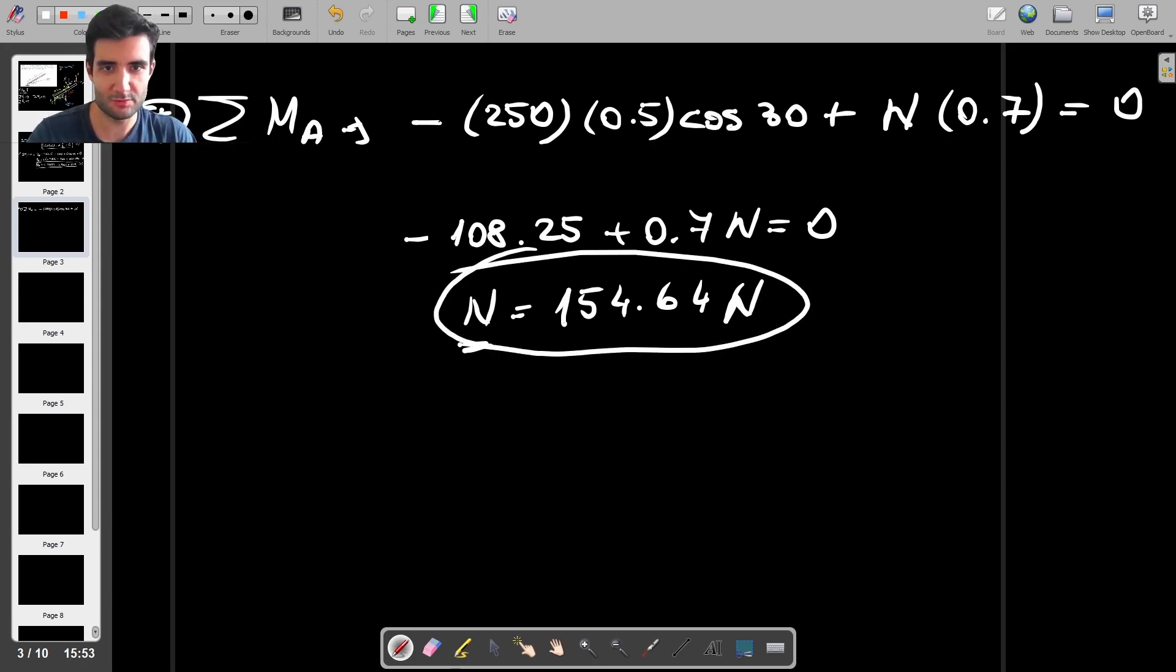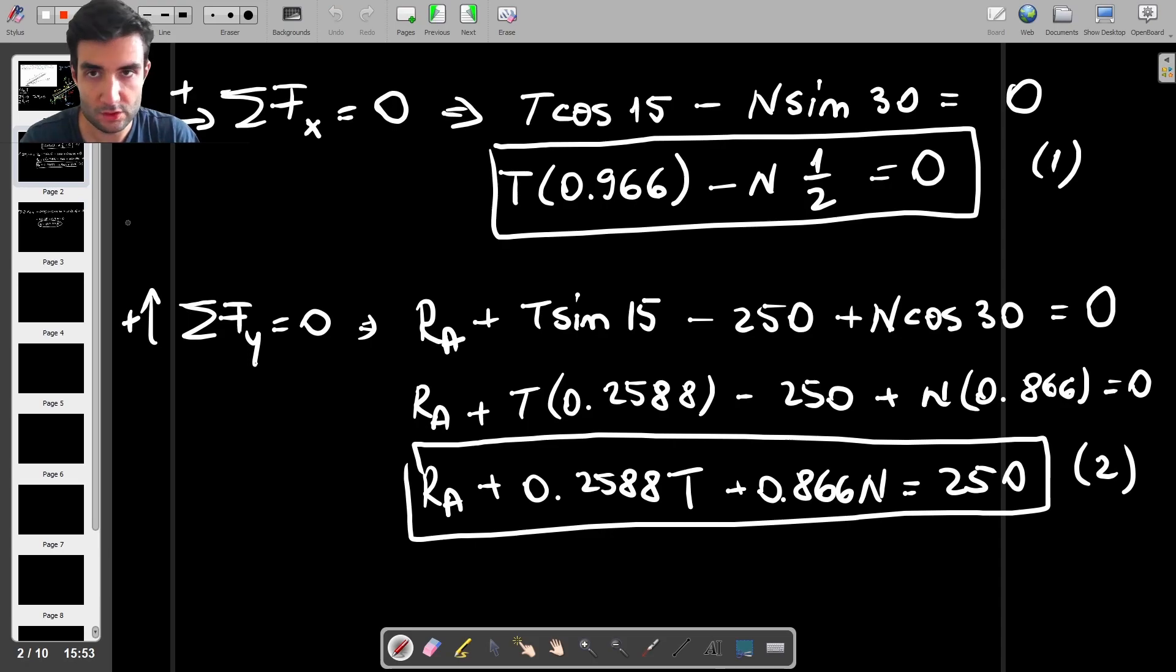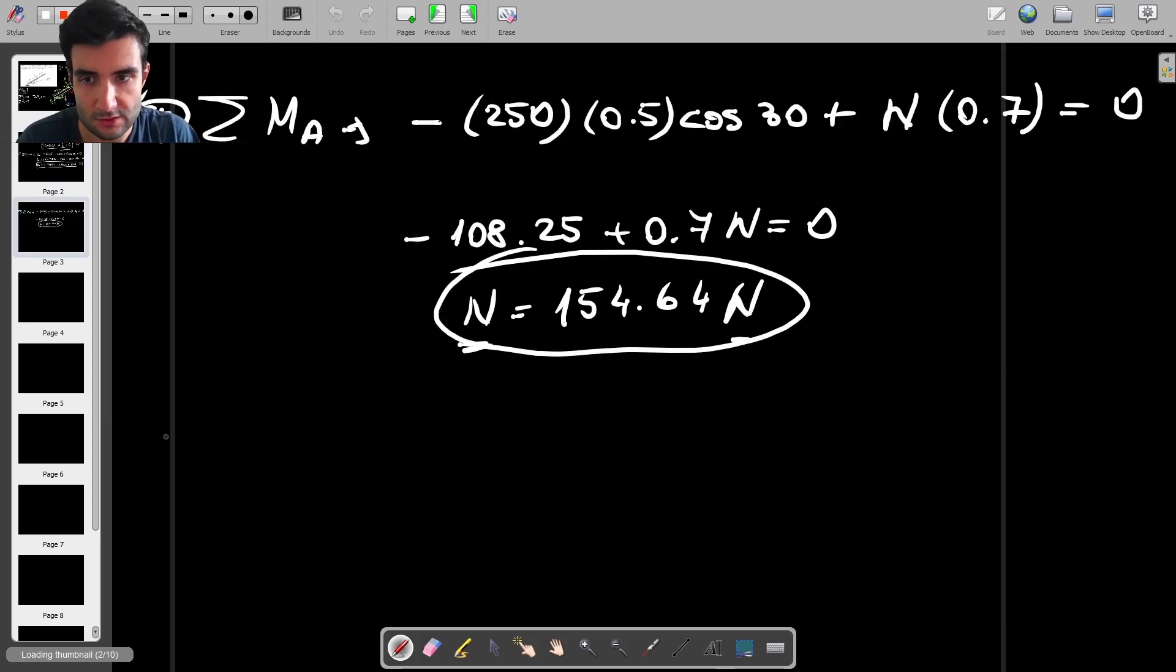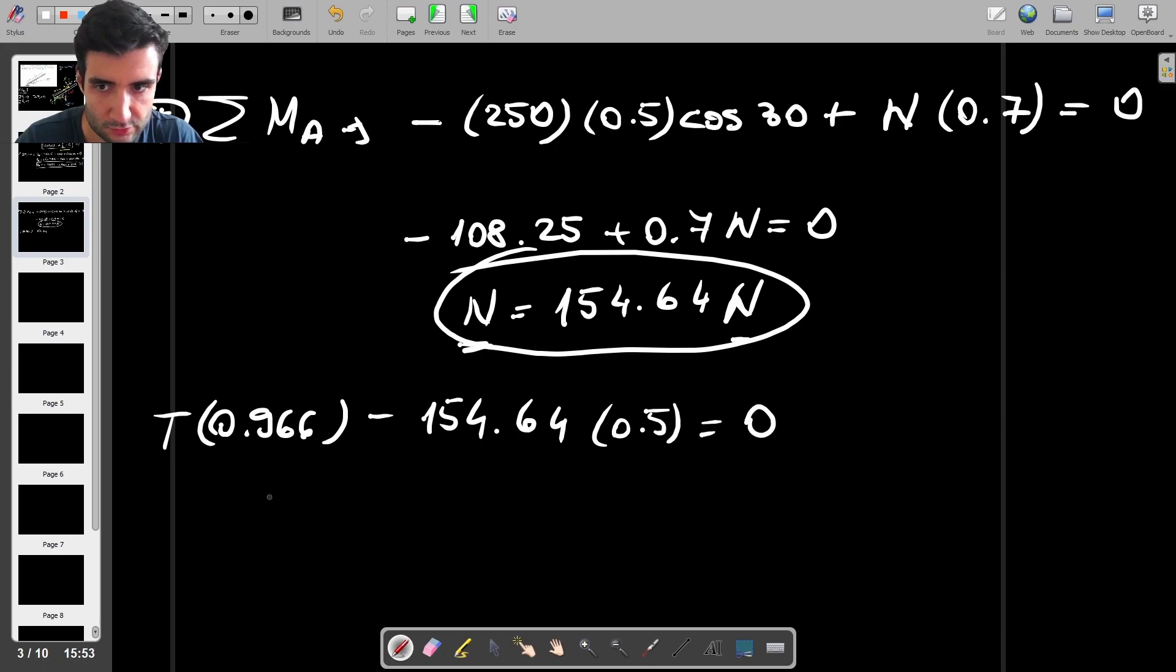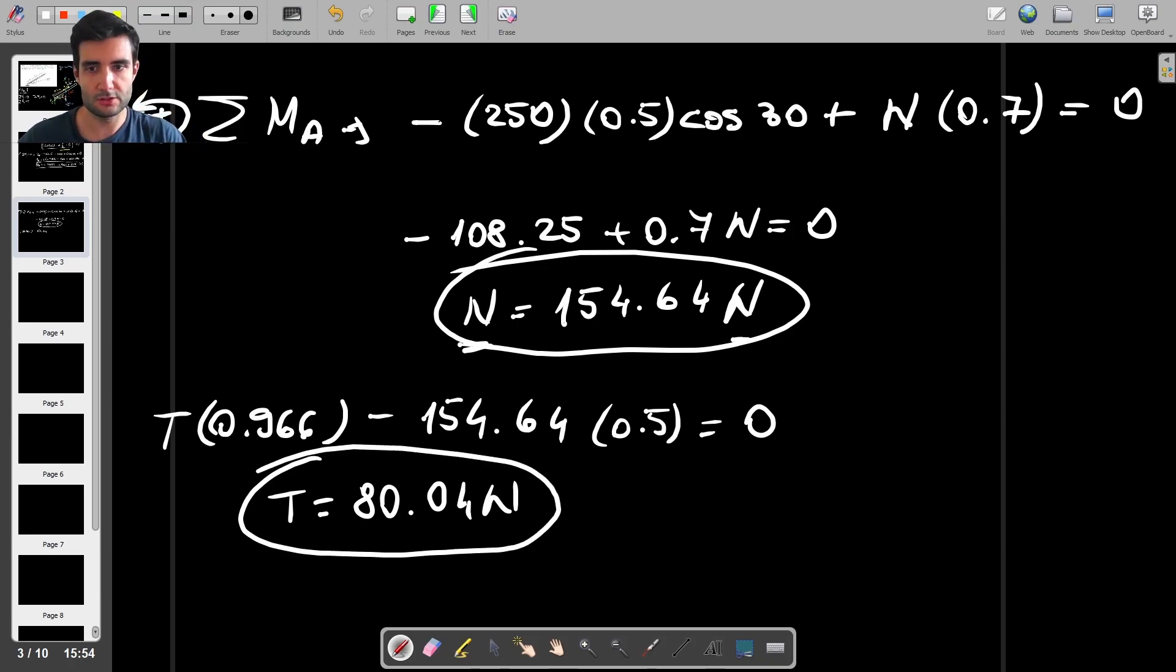Yeah, this N stands for the normal force and this N stands for the units for Newtons. Okay, so we're done with that, which means now we can go back to equation one and find the tension. So that's going to be T times 0.966, and then we have minus 154.64 times one half times 0.5, and that is equal to zero. So the tension is 154.64 times 0.5 divided by that, and this is 80.04 Newtons. So that's the value of the tension in the string.